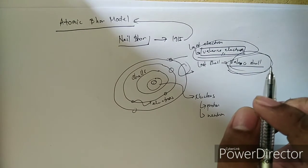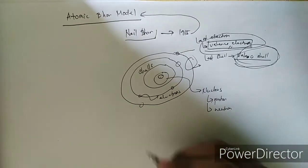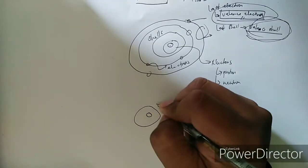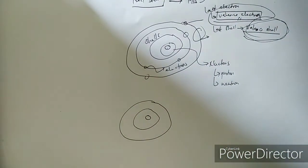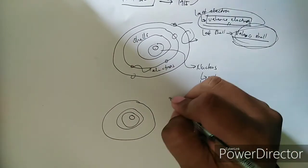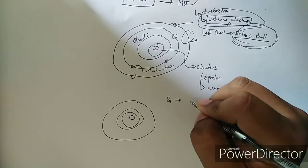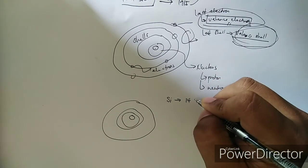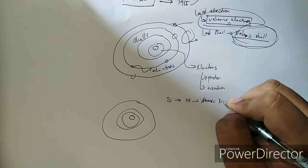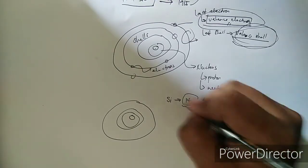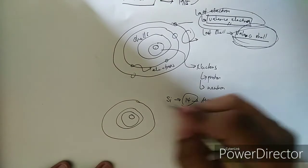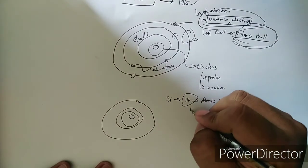For example, let's take the silicon atom. The silicon atom has an atomic number of 14, meaning it has an atomic number of 14. If it has an atomic number of 14, then the number of electrons that orbit its shell is also equal to 14.